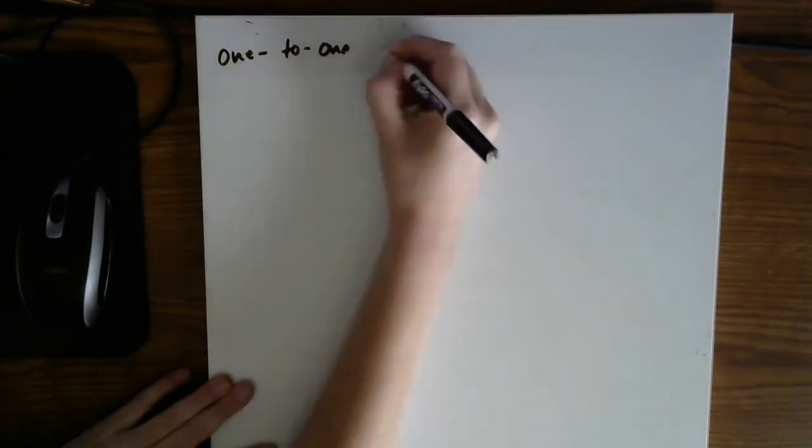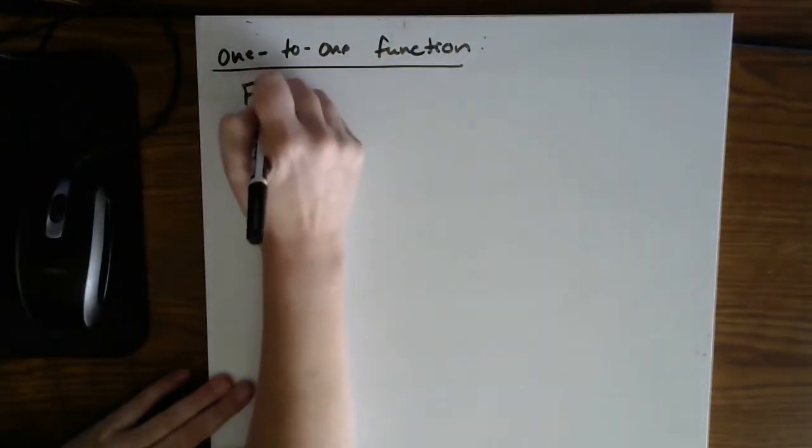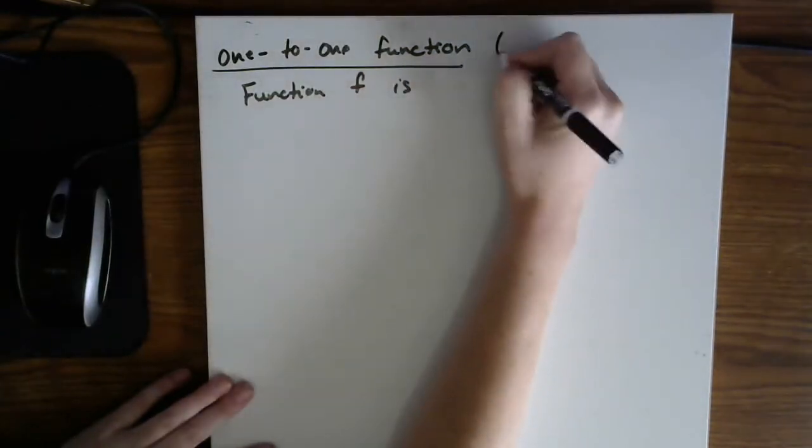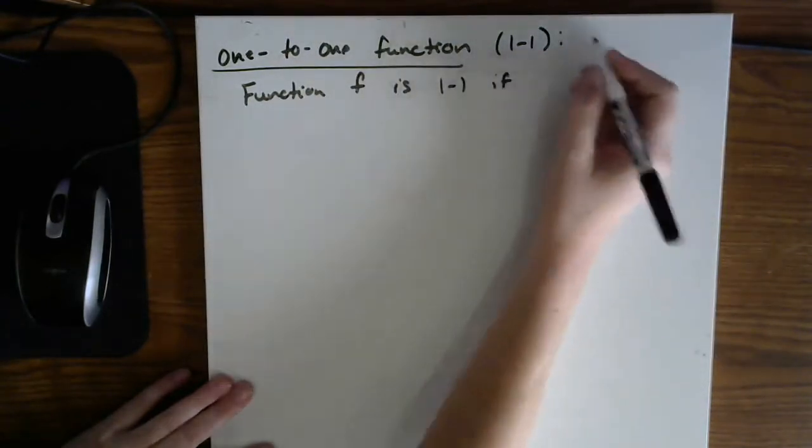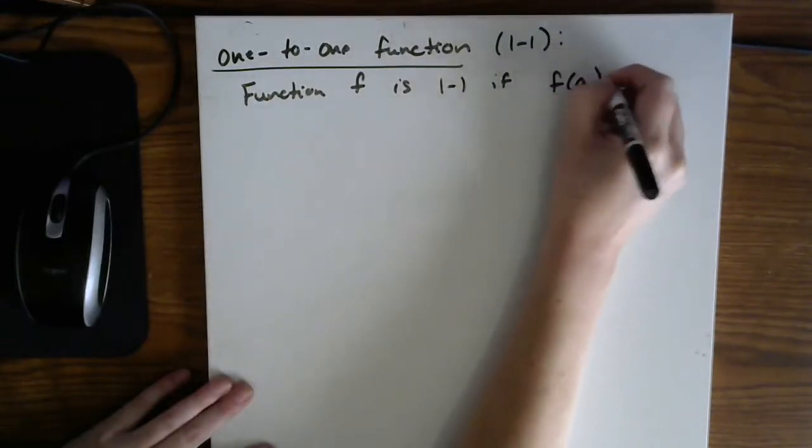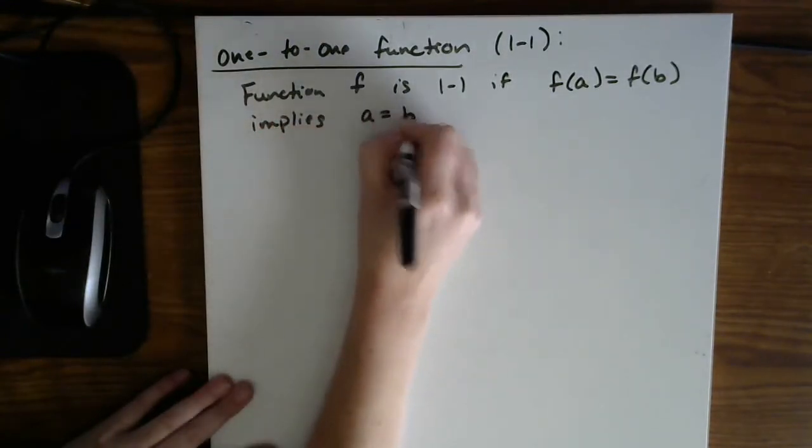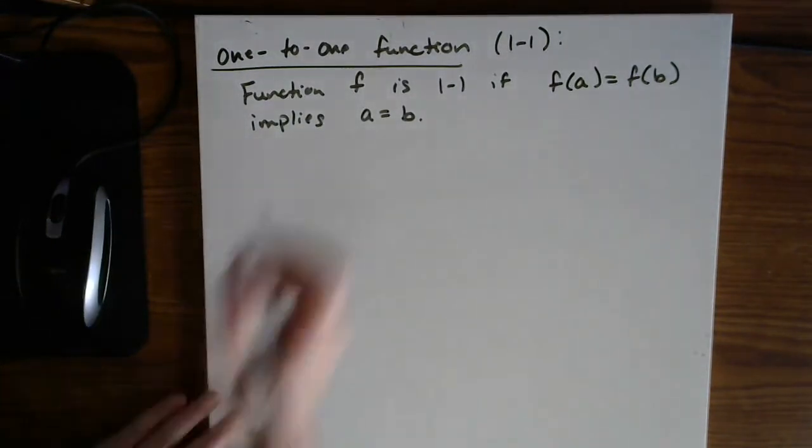So the next thing that we should discuss in this section is what are known as one-to-one functions. So a one-to-one function has a very specific definition. Let's say that a function f is considered one-to-one if f of a equals f of b implies a equals b. So that's the definition in its most general sense. Stated in English,